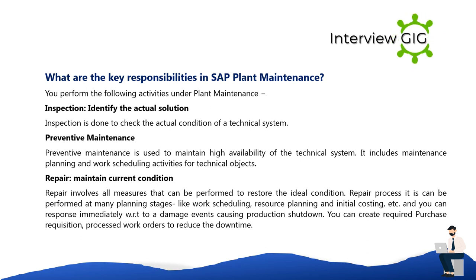Repair — involves all measures that can be performed to restore the ideal condition. The repair process can be performed at many planning stages like work scheduling, resource planning, and initial costing. You can respond immediately to damage events causing production shutdown, and you can create required purchase requisitions and process work orders to reduce the downtime.